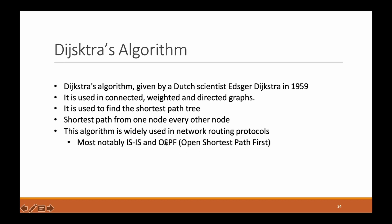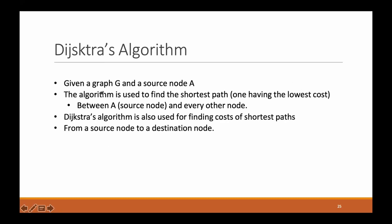Now let's have a look at Dijkstra's algorithm. Given a graph G and a source node A, the algorithm is used to find the shortest path — the one having the lowest cost — between the given source node A and every other node. So Dijkstra's algorithm is used to find the cost of shortest paths from a source node to all destination nodes.